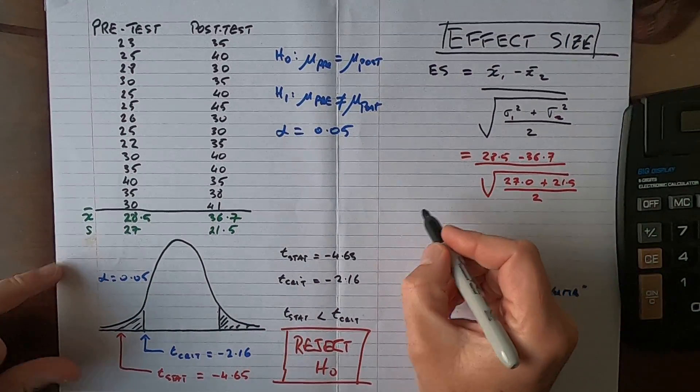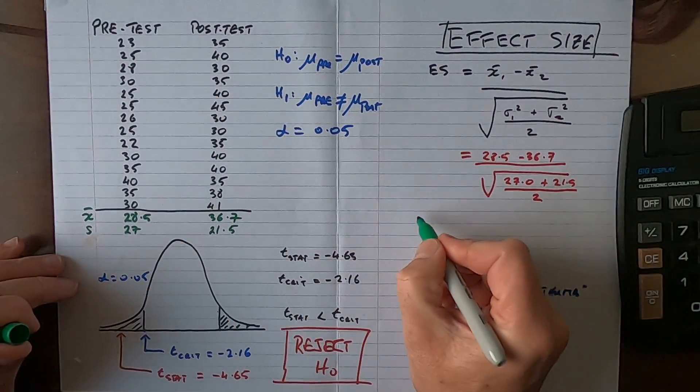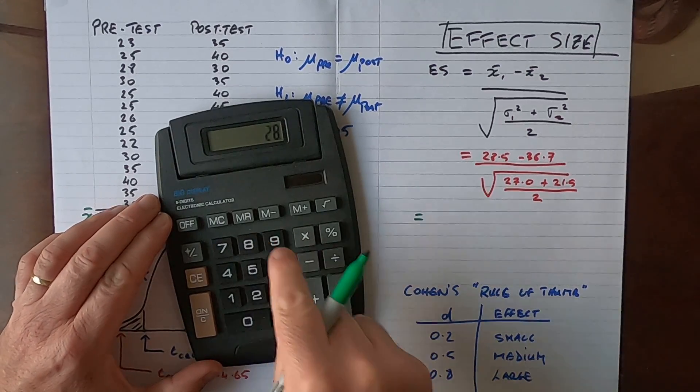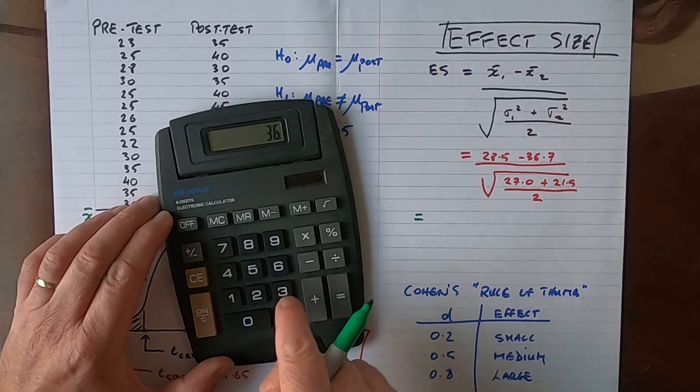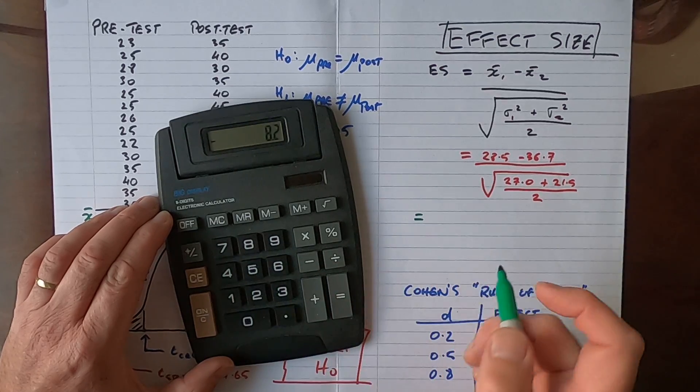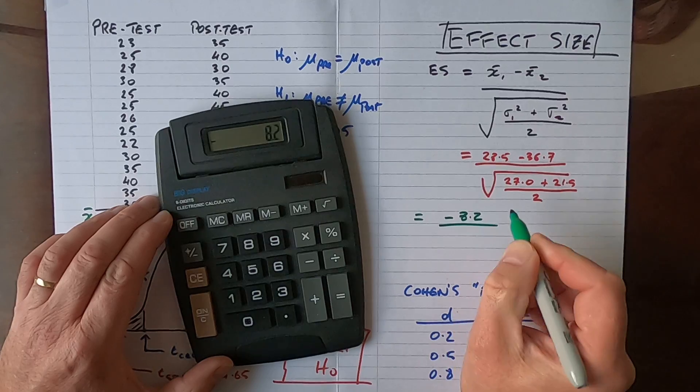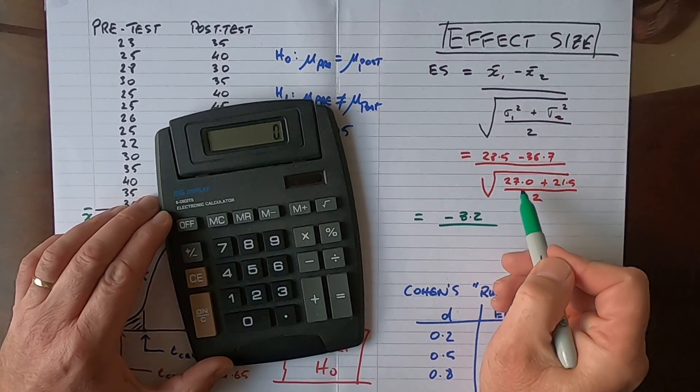Then what we do is finish that out. We will work this out one by one. So 28.5 minus 36.7 is equal to minus 8.2, divided by the square root of the two variances added together. Let me perform that, so 27 plus 21.5 equals, and then divide that by 2.